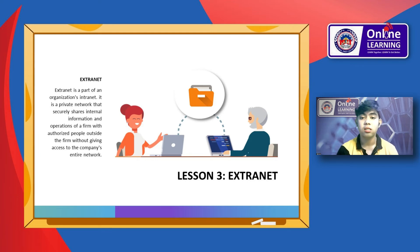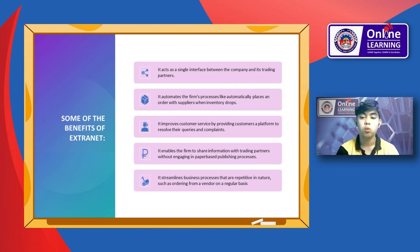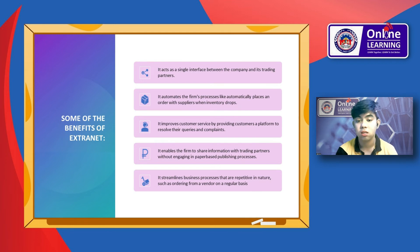Now we will discuss the extranet. Extranet is a part of an organization's intranet. It is a private network that securely shares internal information and operations of a firm with authorized people outside the firm, without giving access to the company's entire network. Some benefits of extranet are that it acts as a single interface between the company and its trading partners, automates firm processes like automatically placing orders with suppliers when inventory drops, improves customer service by providing a platform to resolve queries and complaints, enables sharing of information with trading partners without paper-based publishing, and streamlines repetitive business processes such as ordering from a vendor on a regular basis.